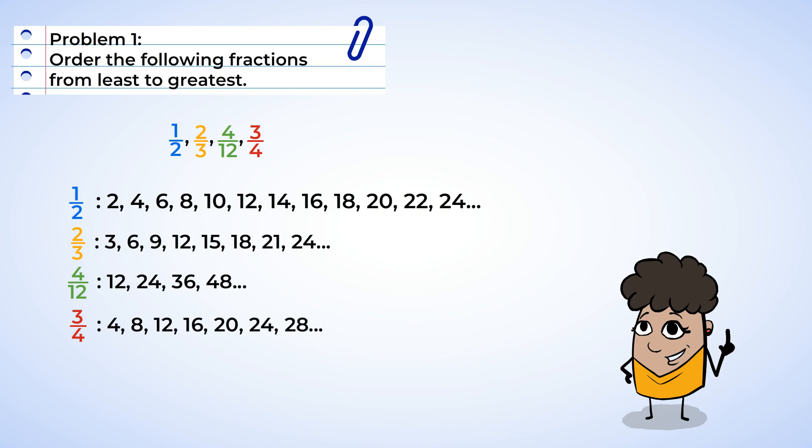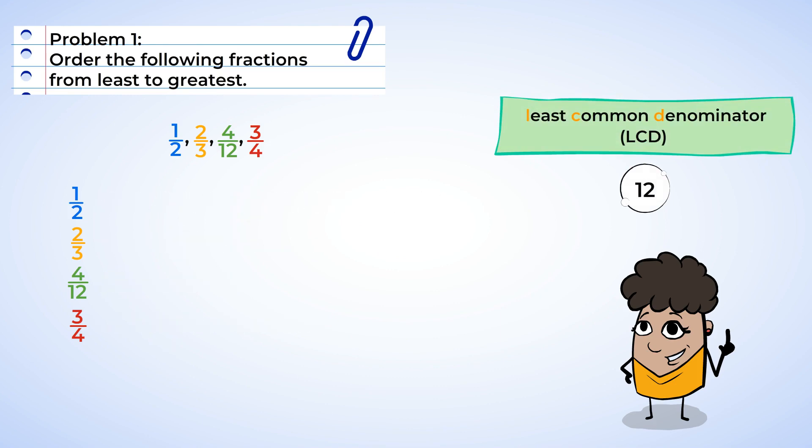So looking at our list of multiples, we see that all of the fractions have 12 and 24 as a common multiple. And if we continued our list, they'd also have 36 and 48 in common too. But 12 happens to be the smallest, and therefore it's our LCD. So now our goal is to change each fraction so that the denominator is 12. We already know that we can multiply the numerator and denominator of one-half by six to get to six-twelfths, since we just did a problem with that. That's handy.